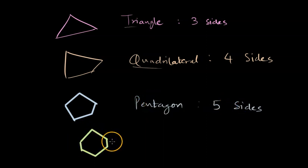Then you can also draw a hexagon. This is known as hexagon and hexa means six. So it has six sides or six angles.